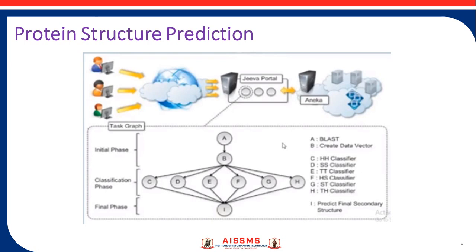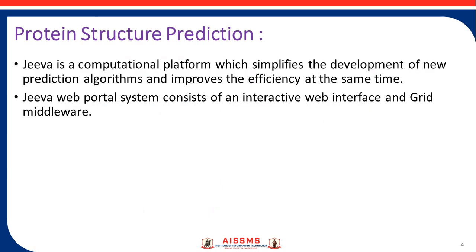The prediction algorithm is translated into a task graph, which is submitted to ANIKA. Once the task is completed, the middle layer makes the result available for visualization to the portal. JIVA is a computational platform that includes an efficient system and a new algorithm for the prediction of protein structure.